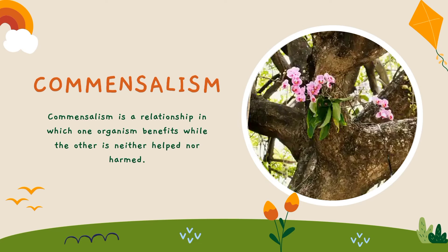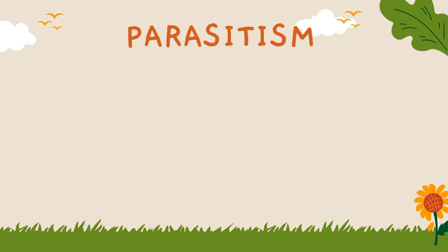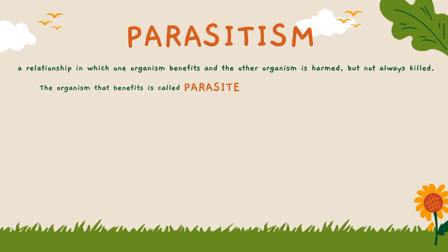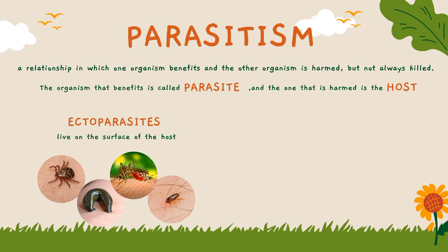The commensal is the one that benefits from the relationship, and in our example, it is the orchid. Another example of symbiotic relationship is parasitism. It is a relationship in which one organism benefits and the other organism is harmed but not always killed. The organism that benefits is called the parasite and the one that is harmed is the host. Parasites can be ectoparasites such as mosquitoes, ticks, fleas, and leeches. Ectoparasites live on the surface of the host.